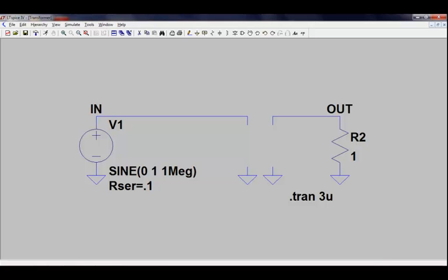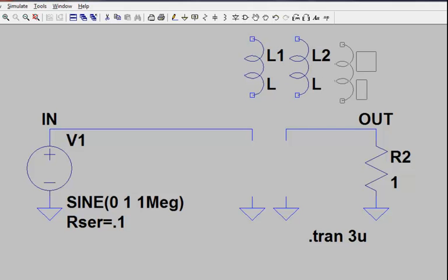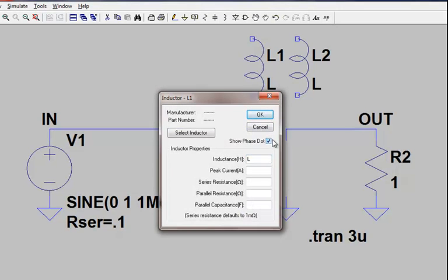To draw a transformer, we need to define each of the windings using an inductor symbol. Let's place two inductors side by side in our schematic. If we want to see the phase dot of these inductors, we can right-click on the inductor symbol, check show phase dot, and click OK.